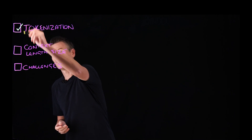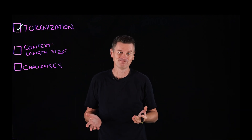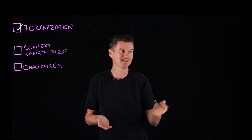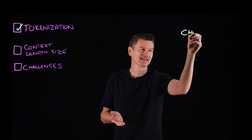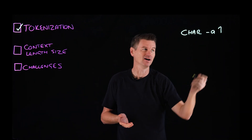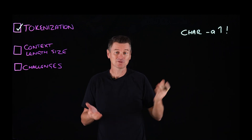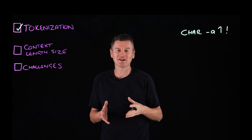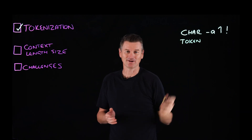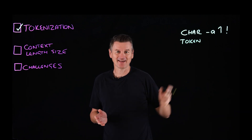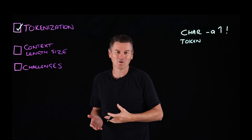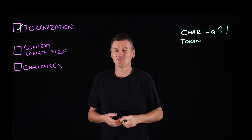So to start, what is a token? Well, for us humans, the smallest unit of information we use to represent language is a single character — something like a letter, a number, or a punctuation mark. But the smallest unit of language that AI models use is called a token. Now a token can represent a character as well, but it might also be a part of a word, a whole word, or even a short multi-word phrase.